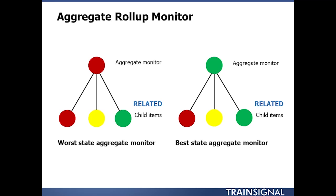This really depends on the nature of the service. The word 'related' here is really important — the monitors have got to be related in some way. Aggregate monitors generally watch similar items such as groups of DNS servers or groups of DHCP servers, and report back to Operations Manager on the overall health of the service group as a whole.